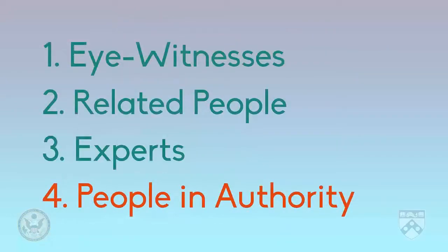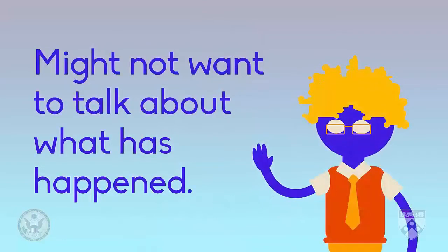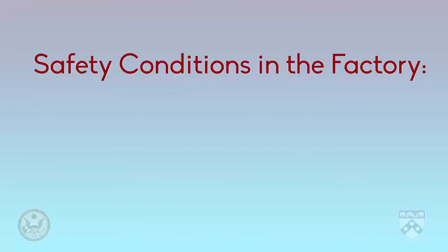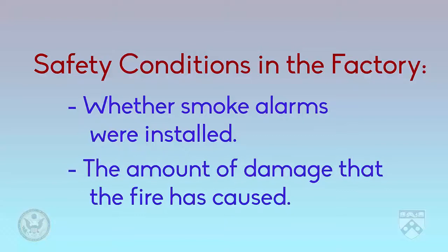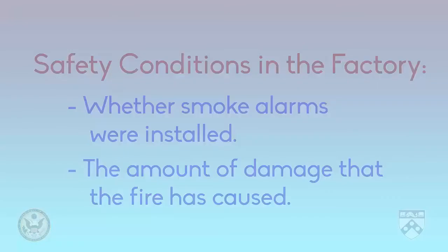The fourth type of source is a person in authority. In this case, it could be the owner of the factory. These types of sources are usually the hardest to interview, because the person in authority might not want to talk about what has happened, especially if they're responsible. This person can talk about the safety conditions in the factory, such as whether smoke alarms were installed, the amount of damage that the fire has caused, and give more details about the person who was injured.